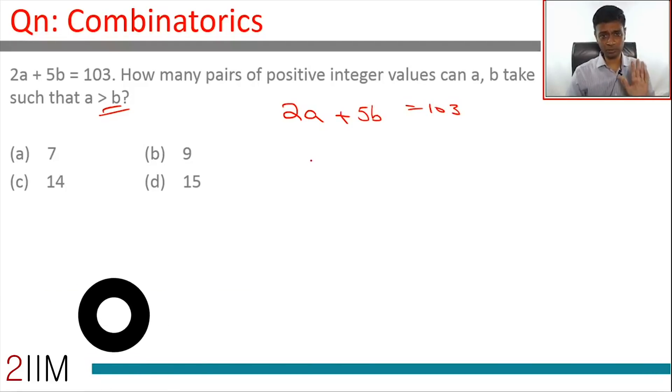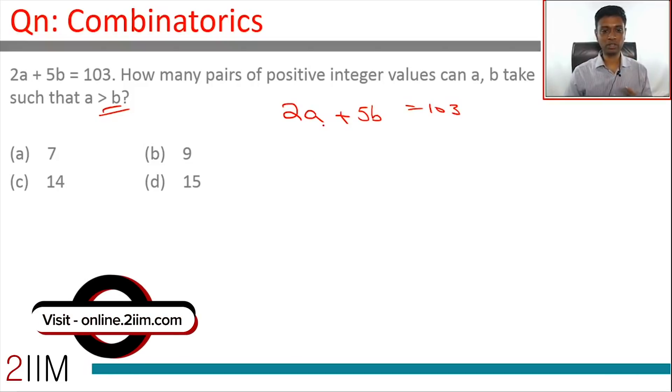Let's try to find one value and work from there. If a is 1, then 2 times 1 plus 5b is 103, so 5b is 101. That doesn't work. If a is 2, this becomes 4. 103 minus 4 is 99. Write this as 5b equals 103 minus 2a. If a is 3, this becomes 103 minus 6. That doesn't work.